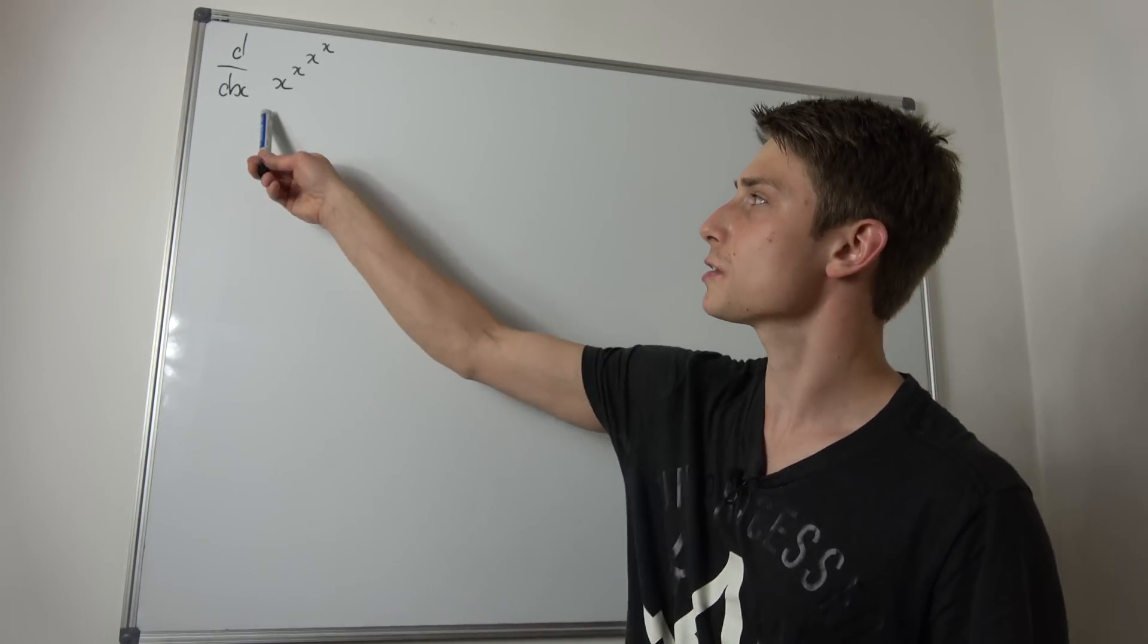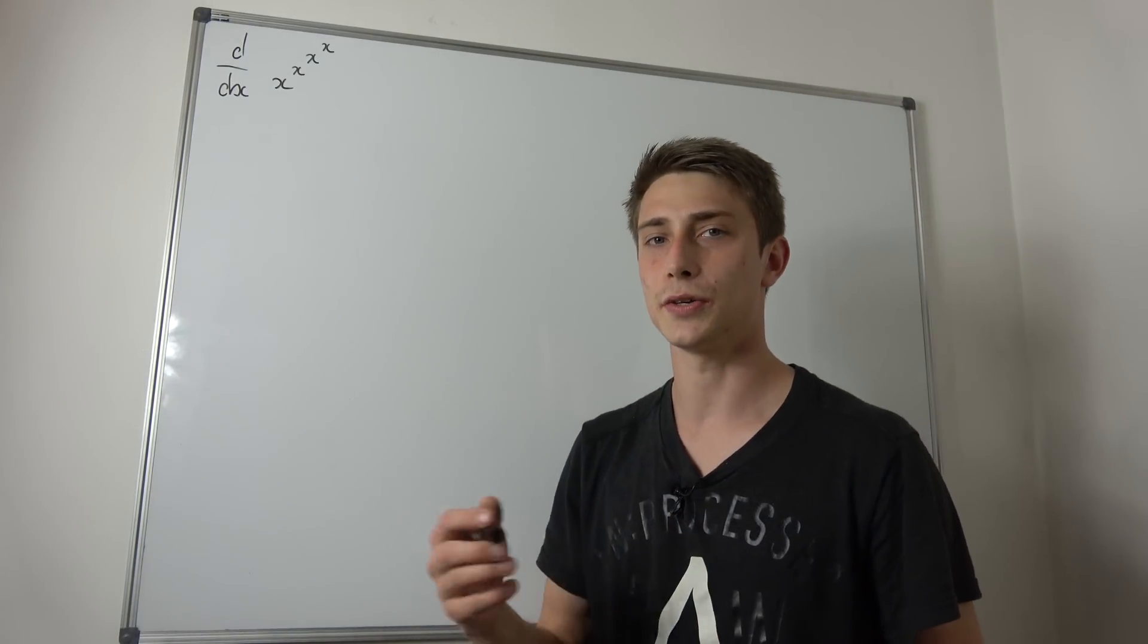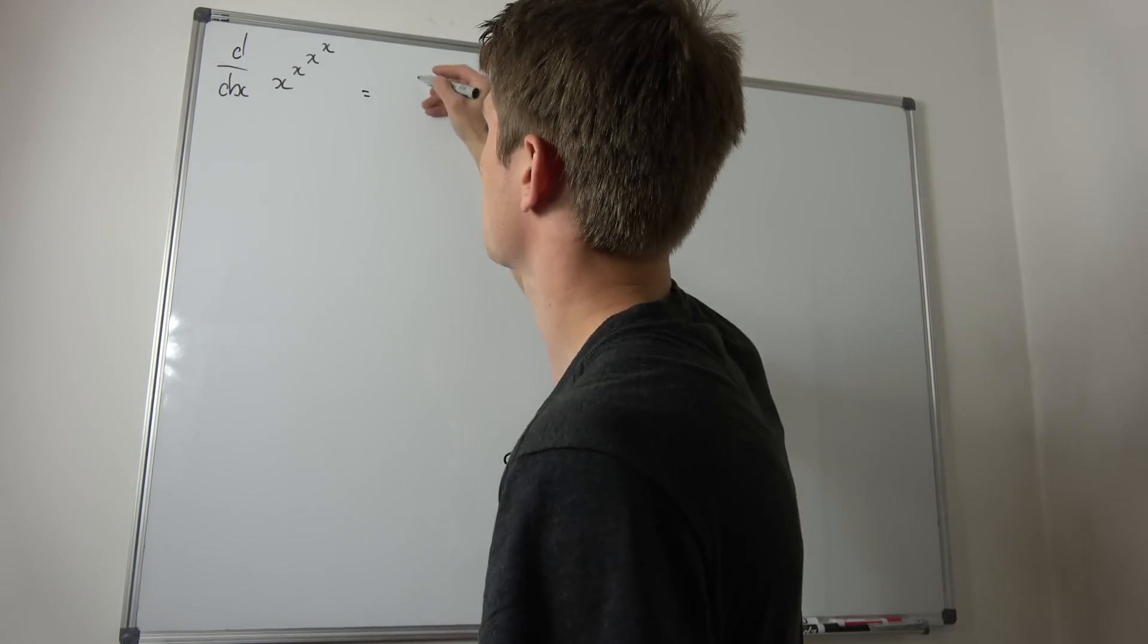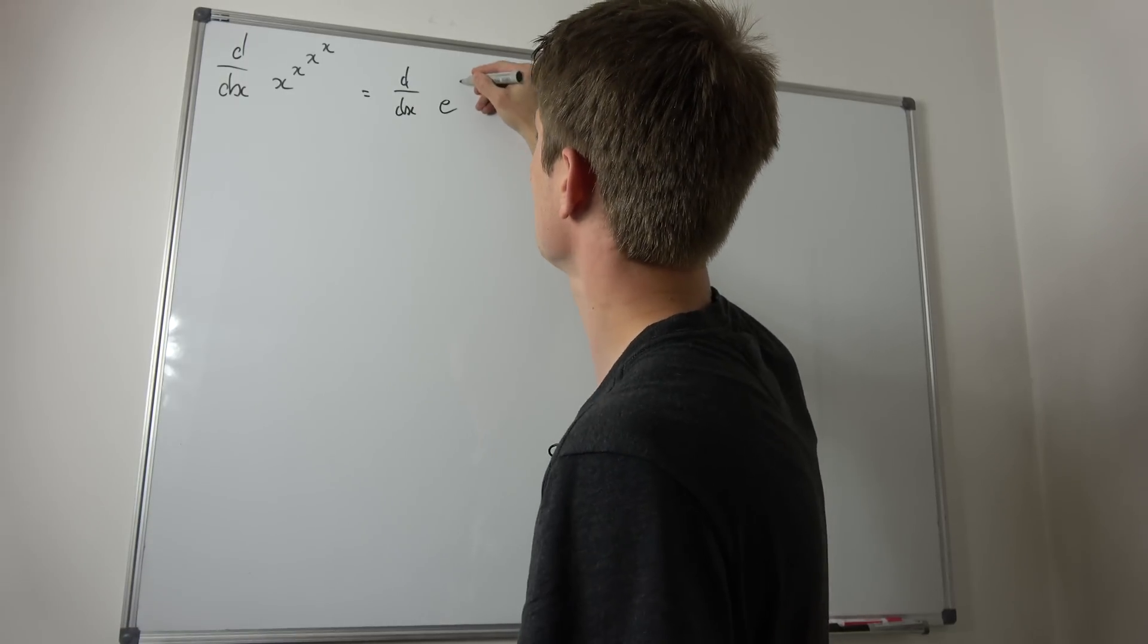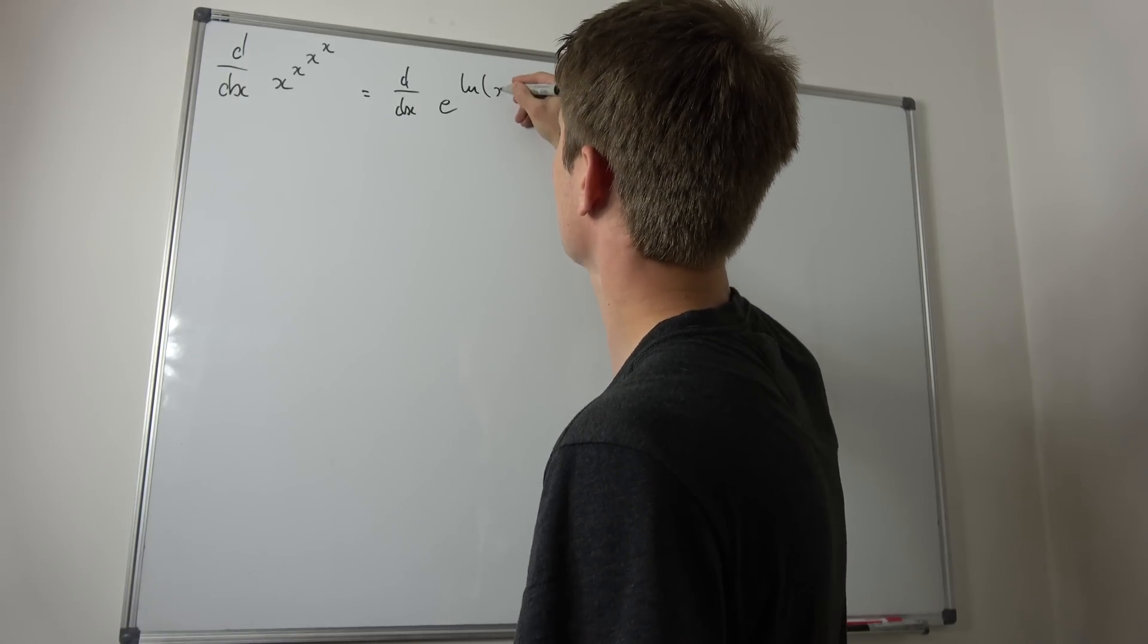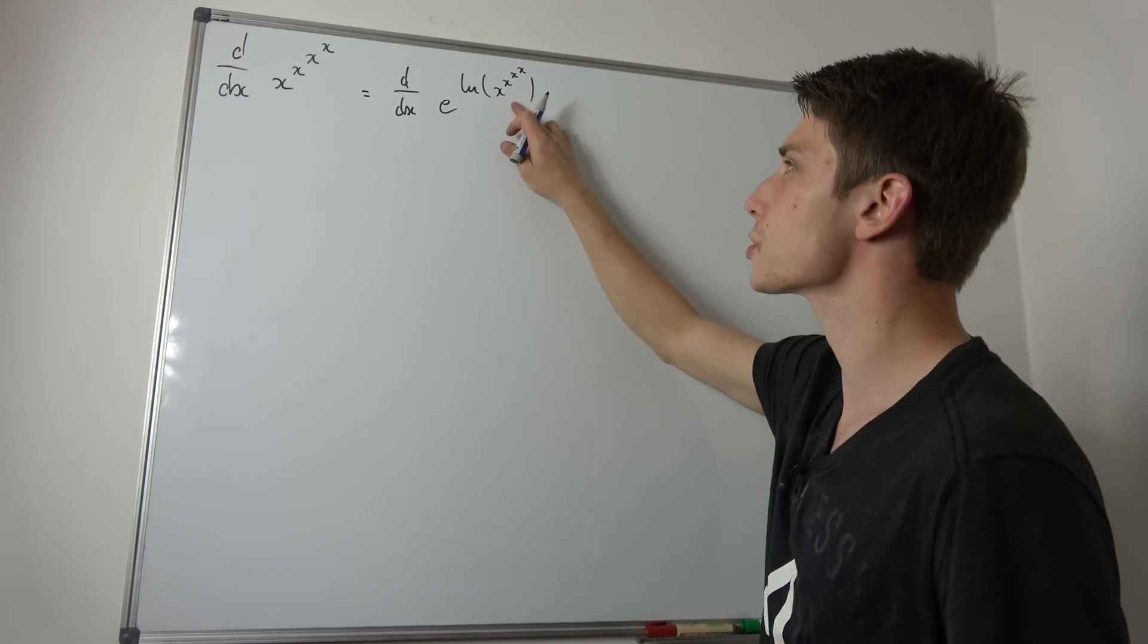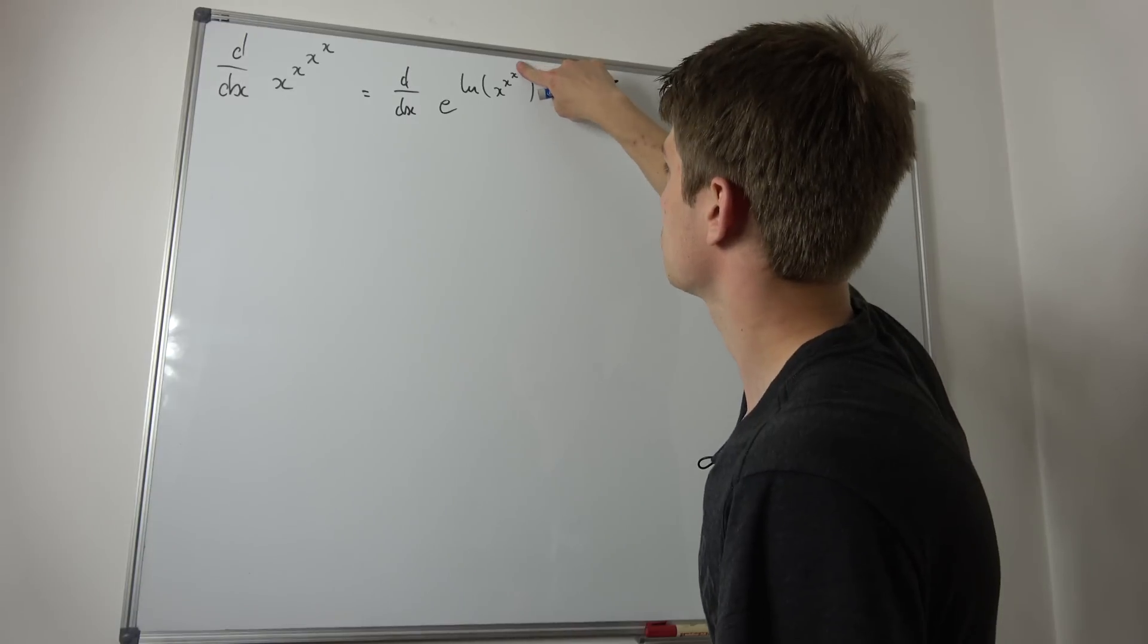So as you might notice, we can rewrite this x^(x^x) as the following: it's the same as saying we have e^(ln(x^(x^x))). So at first let's rewrite this as the derivative with respect to x of e^(ln(x^(x^x))). And now we can use the natural log rules to bring this exponent, which is x^x, to the outside.